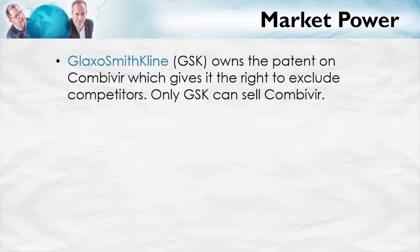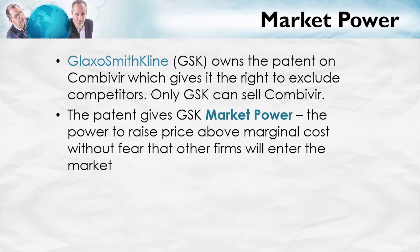GlaxoSmithKline, or GSK, owns the patent on Combivir, which means it has the right to exclude competitors. Only GSK can legally sell Combivir. The patent gives GSK a monopoly, or more generally, market power.